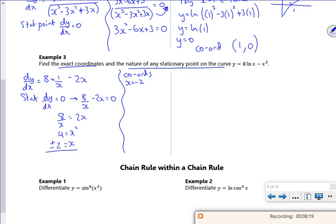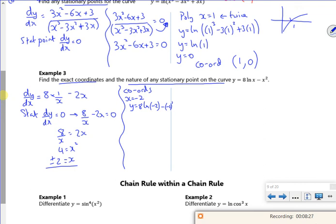I have y as 8 log of minus 2 minus minus 2 squared. But remember that log graph, I can't have a negative. So this one has no value. So there's nothing when the x is minus 2. It's not even in it. So then I've got 8 log 2 minus 2 squared. So my y value is 8 log 2 minus 4. And that's find that. I keep that. I don't make it into a decimal. So that's 8 log 2 minus 4.